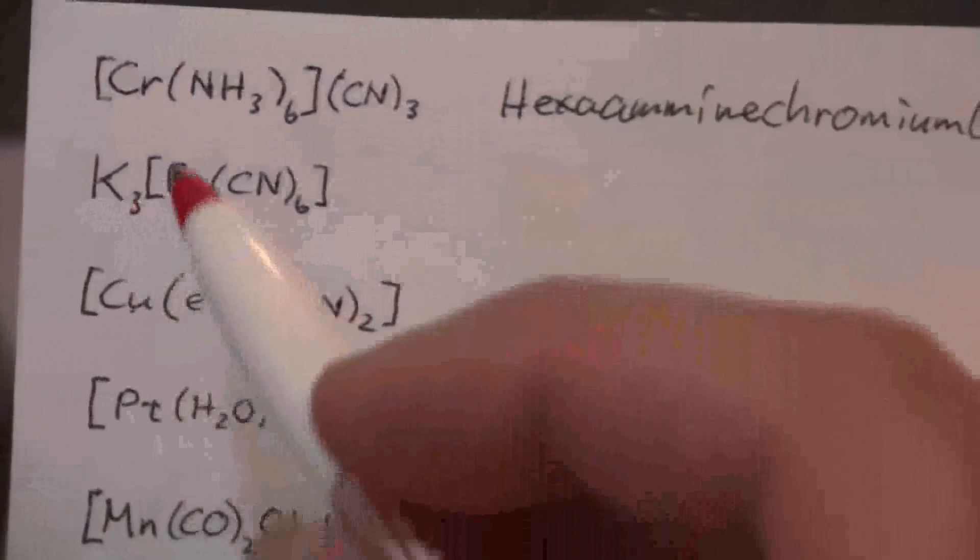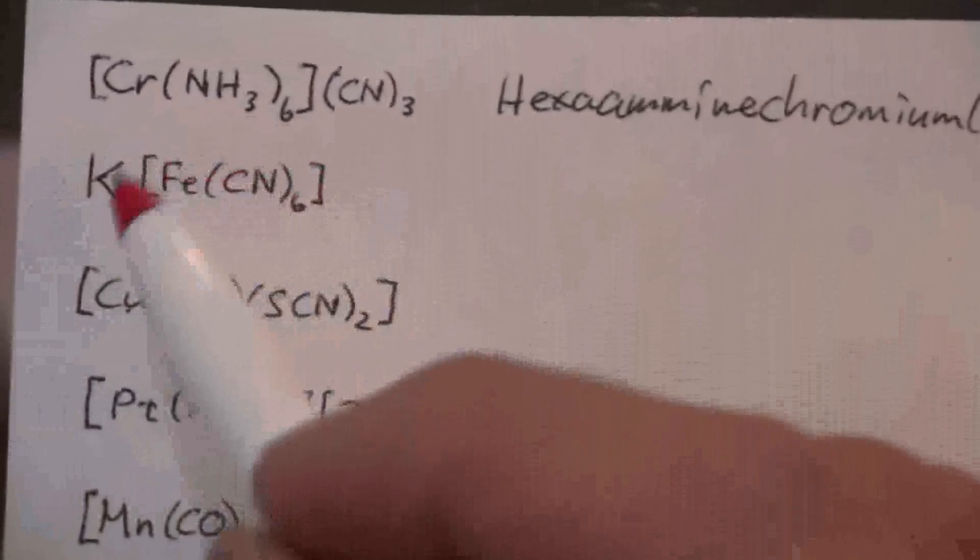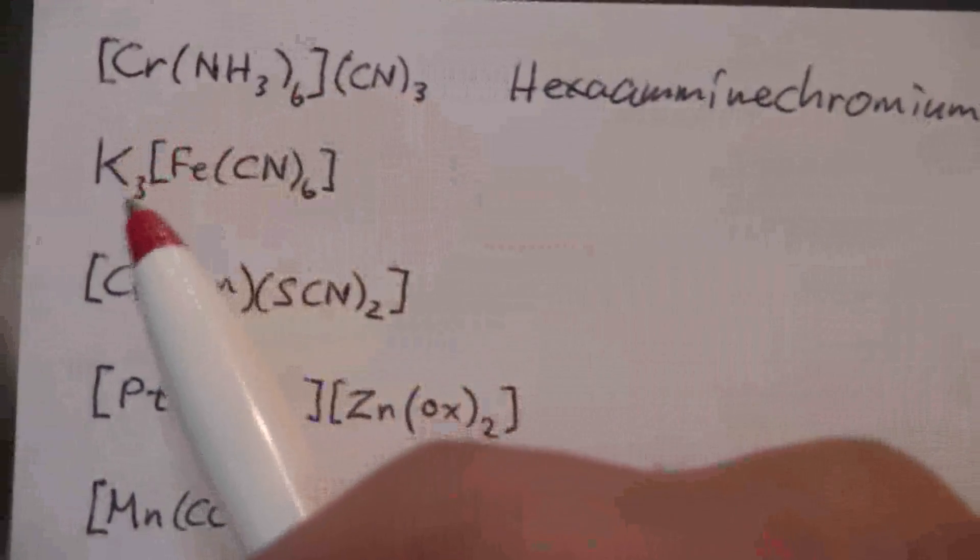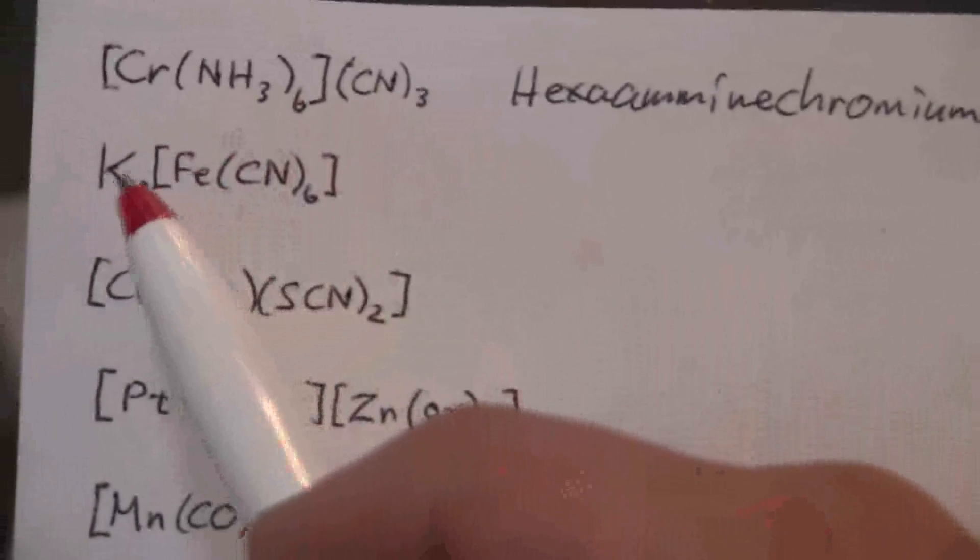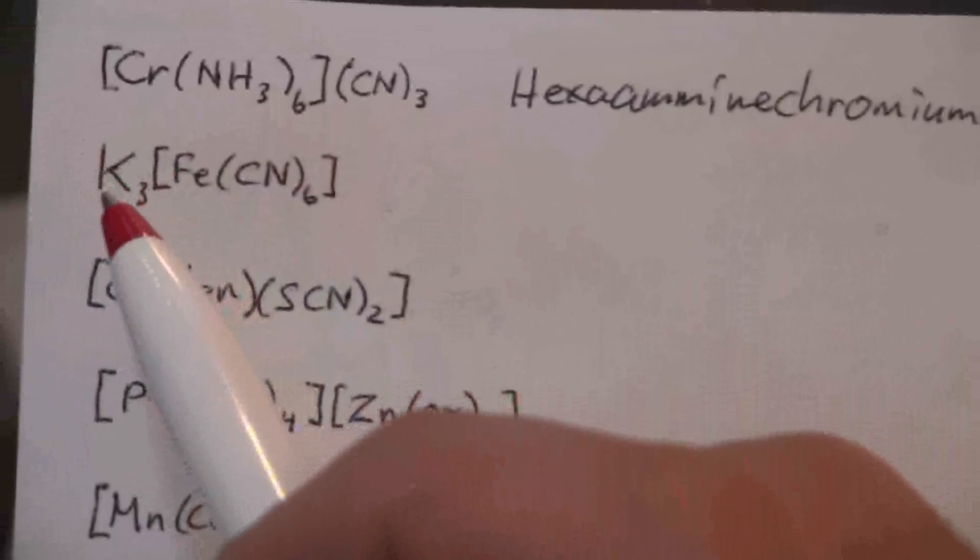All right, next we have another one. This time the anion is the complex ion, so what is the charge of that anion? It must be a negative 3 to balance out the positive 3 from the 3 potassium.